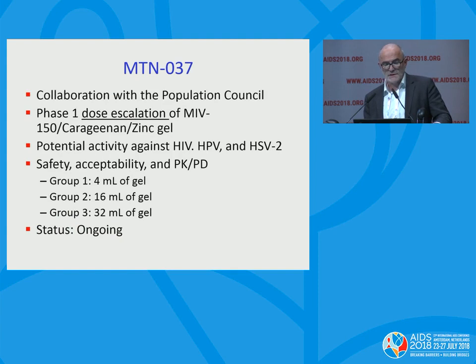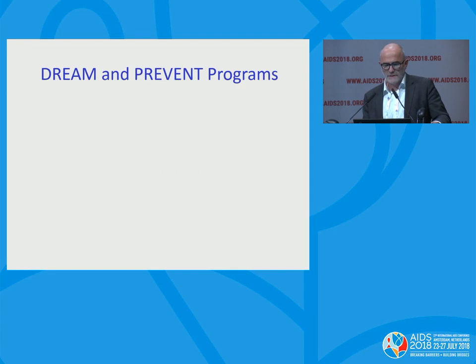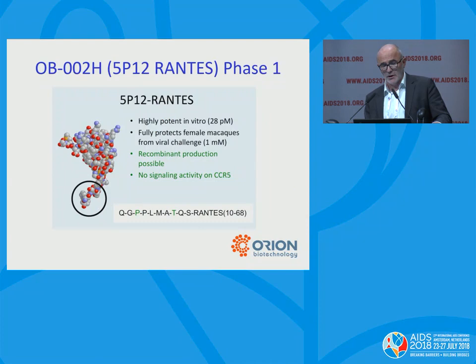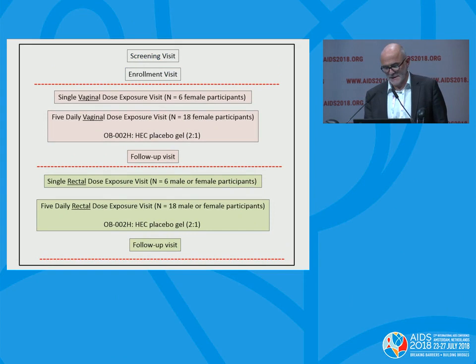There's a hint that carrageenan MIV-150 might be a broad-spectrum antiviral microbicide with activity against HIV, HPV, and HSV, at least in animal models. NIH has also been sponsoring two large discovery phase one programs: the DREAM program with Craig Hendricks' tenofovir enemas, and Kenneth Palmer's rectal gel Griffithsin — an extremely picomolar-potent broad-spectrum antiviral. There is quite a lot of activity, even in Europe. Hopefully next year we'll launch a phase one study in Poland of RANTIS, a CCR5 antagonist — very potent, both rectal and vaginal, single and multiple dose.